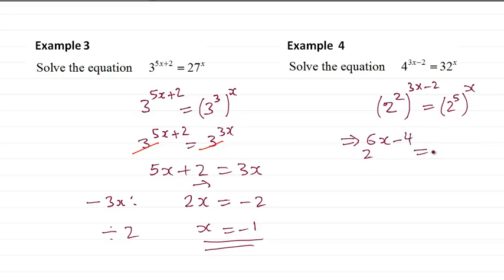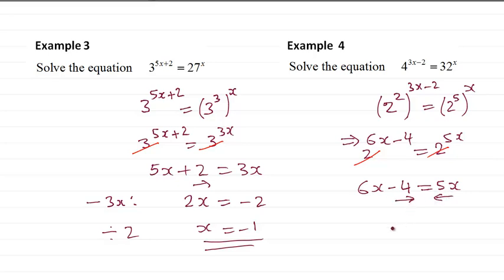And here, 2 to the power 5 times x equals 5x. Now we cancel the base. So we have 6x minus 4 equal to 5x. Bring 5x to the left-hand side: 6x minus 5x is 1x, and minus 4 becomes plus 4. So x equals 4.